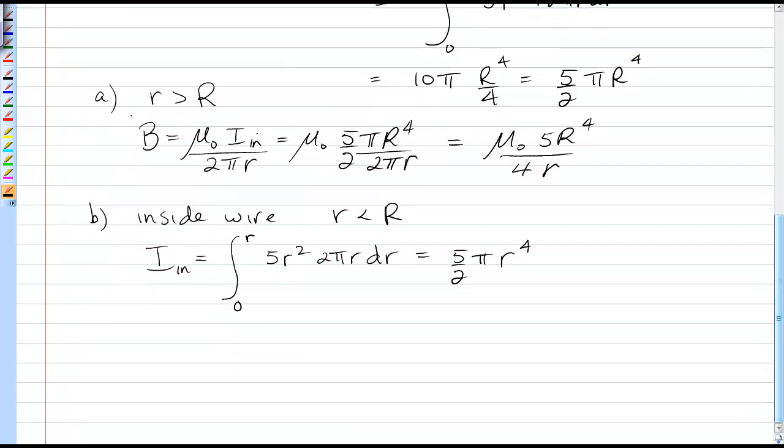So when I go to put that in Ampere's Law, I'll now have a small r to the fourth on top, and 2πr on the bottom. So this now becomes a cubic function in r, which increases as you move towards the edge of the wire.